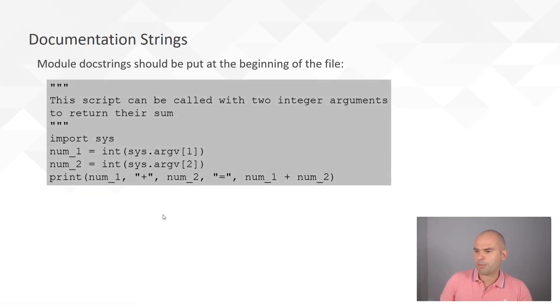Here are some examples. You could put a doc string at the start of each file, if it does something. This doc string is top of this Python script. The script basically tells you what the script does. Can be called with two integer arguments and return their sum.